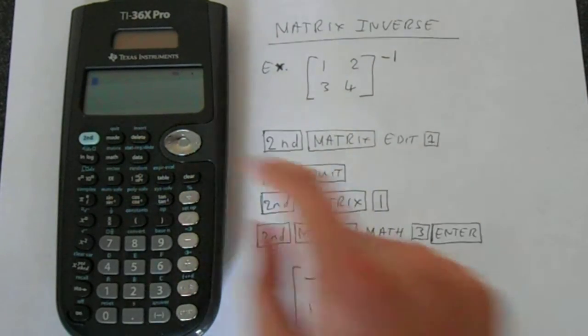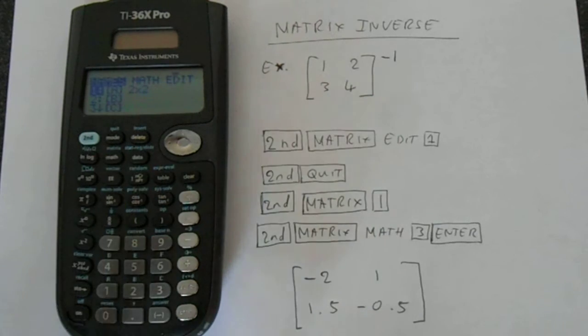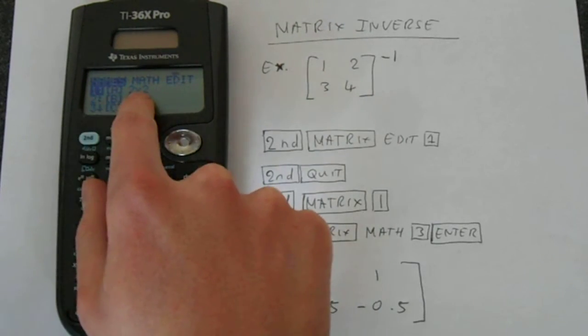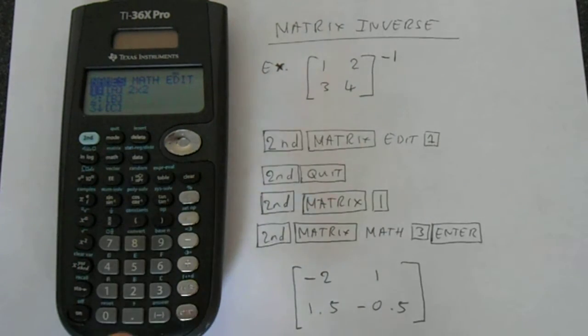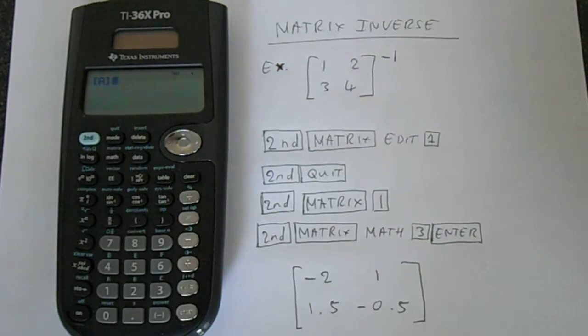Now we go back into the matrix mode. Second function matrix. Then we access this 2x2 matrix that we've just created. We'll just press 1 and that brings that up on the screen.